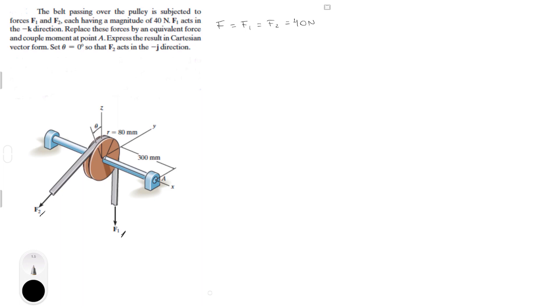F1 acts straight down in the negative k direction and then replaces forces by an equivalent resultant force and coupled moment around point A, which is right here. Express the result in Cartesian vector form and set theta equal to zero. So that F2 acts in the negative J direction.